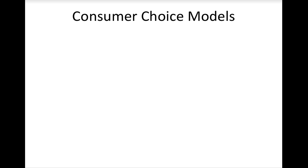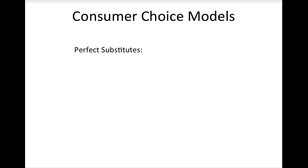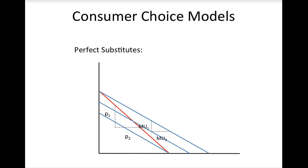In our previous unit, we studied three types of consumer choice models. We studied a consumer's choice when goods are perfect complements, in which we found that the consumer's choice will always be where the budget line touches the corner of an indifference curve. We studied the case of perfect substitutes, in which the consumer's optimal choice is at the top of the indifference curve if the indifference curve is flatter than the budget line.